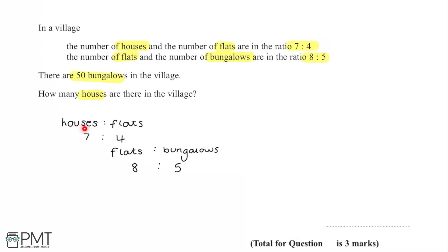Since we're told there are 50 bungalows and asked how many houses there are, we're looking at the ratio between houses and bungalows. We can use the number of flats in each ratio to work out that ratio between houses and bungalows.